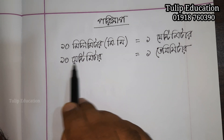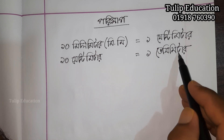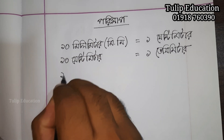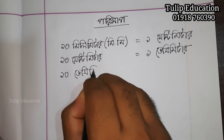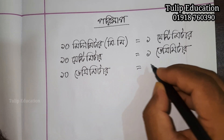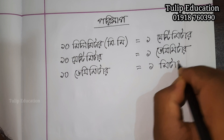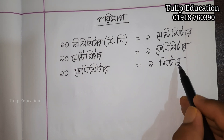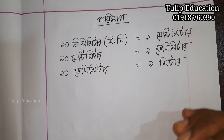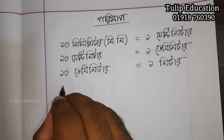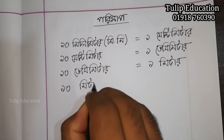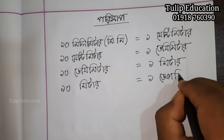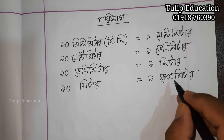Now we have to establish that 10 dm conversions lead us further. This 10 meters is 1 decameter, which we call a decameter.